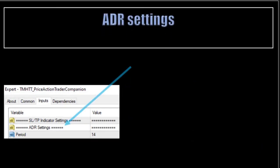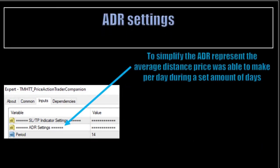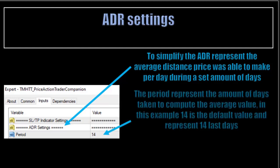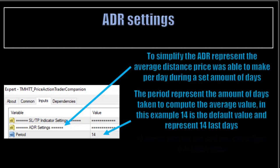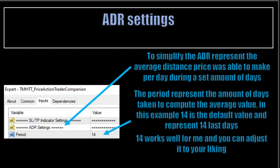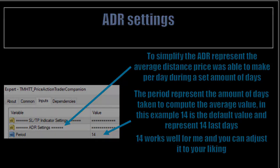ADR settings. To simplify, the ADR represents the average distance price was able to make per day during a set amount of days. The period represents the amount of days taken to compute the average value. In this example, 14 is the default value and represents the last 14 days. 14 works well for me, but you can change it to your liking.